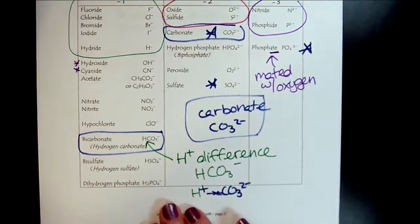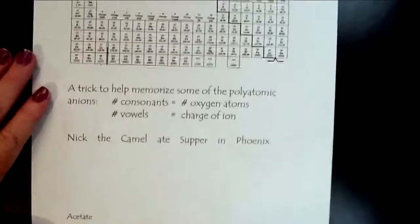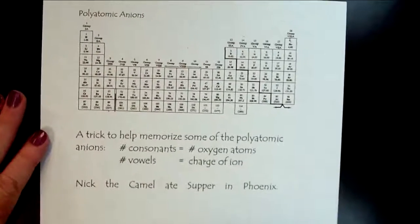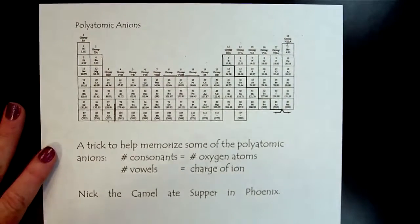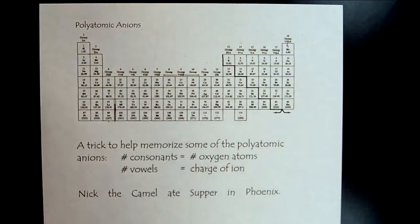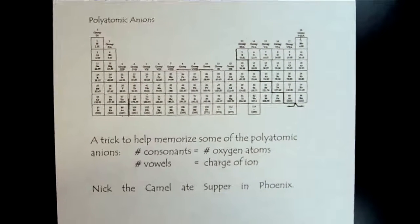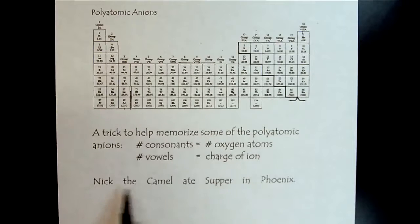And then a little bit more help on these polyatomic anions, because I really do appreciate that they're the hardest work, the most difficult to memorize. So let's look at those a little more closely. And here's a trick. So if you want to, you can just write, Nick the camel ate supper in Phoenix.